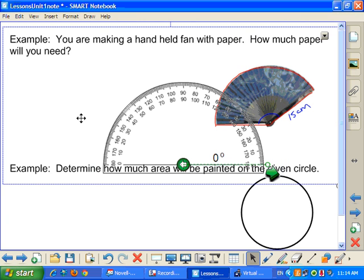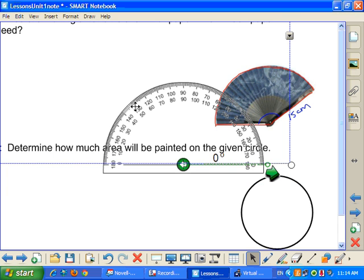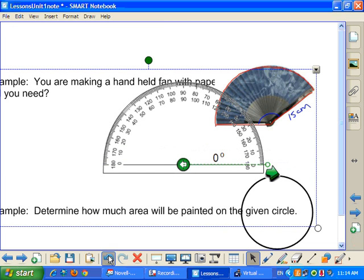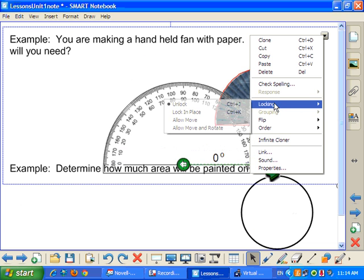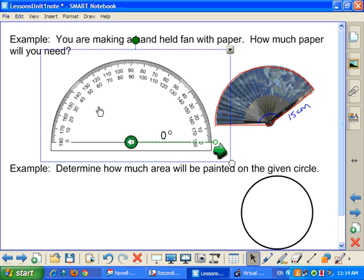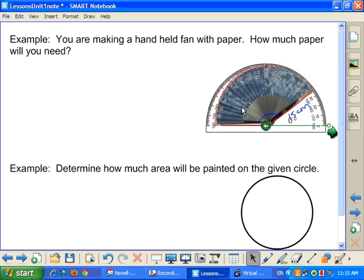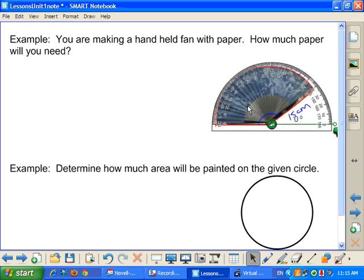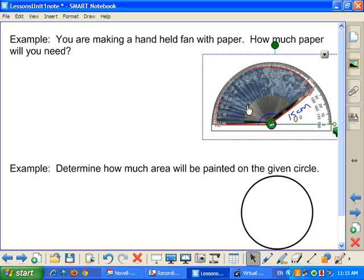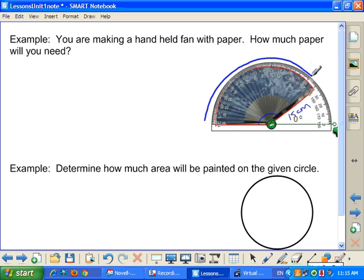So I'm going to pull out my handy dandy protractor. I'm going to shrink that protractor a little bit. So I'm going to put my baseline on the bottom of my fan and put the center at the hinge. So now when I go around and read it, I'm going to be reading it in this direction. Looks like it's going to be about 142. So 142 degrees.